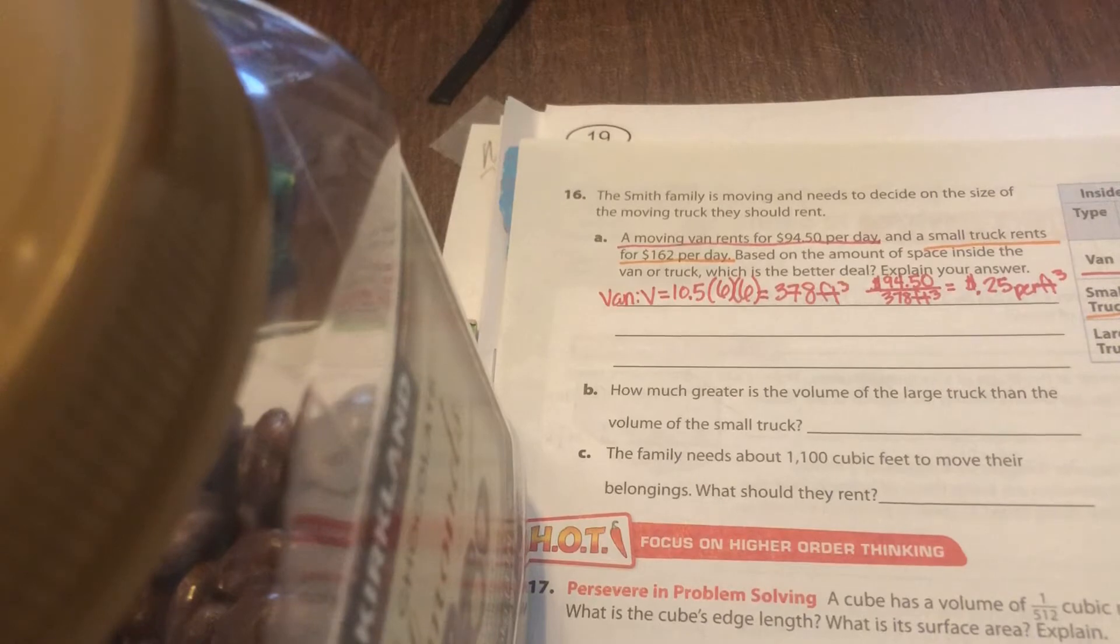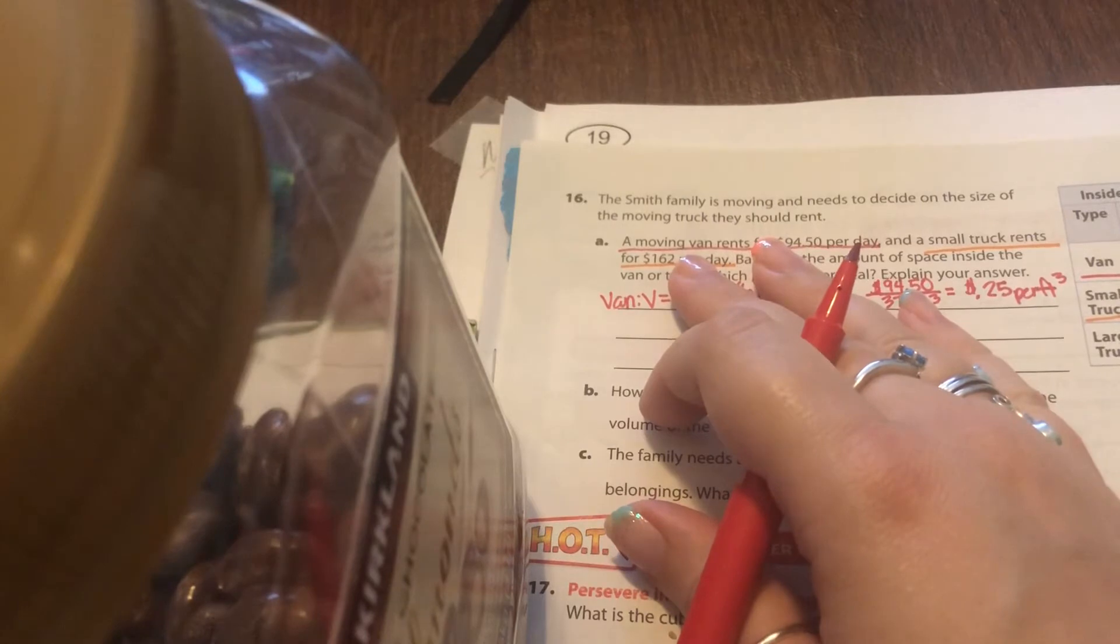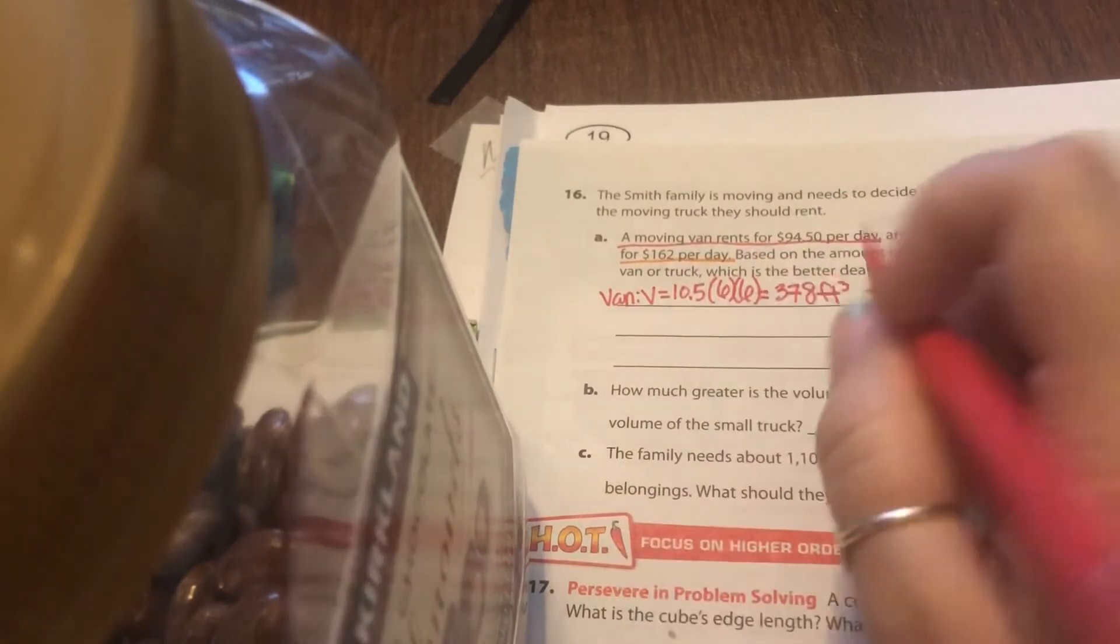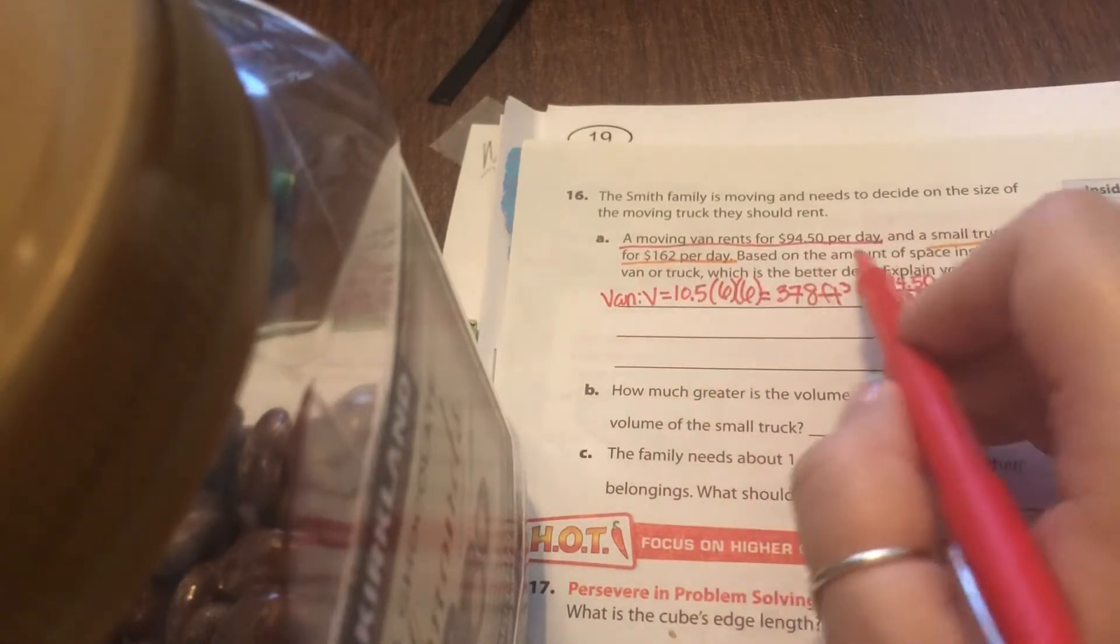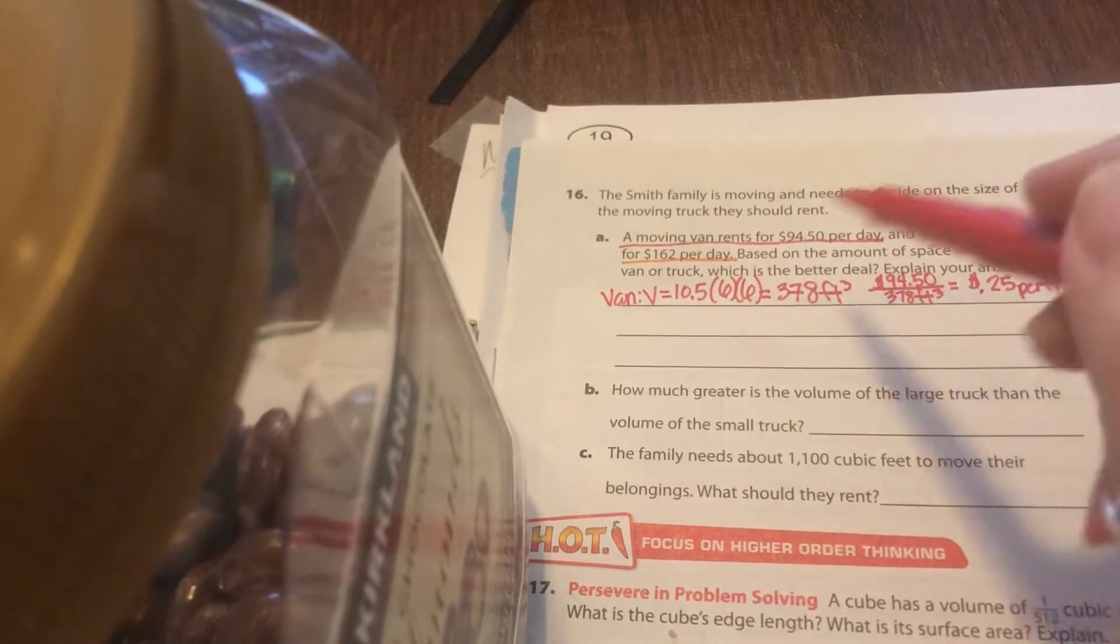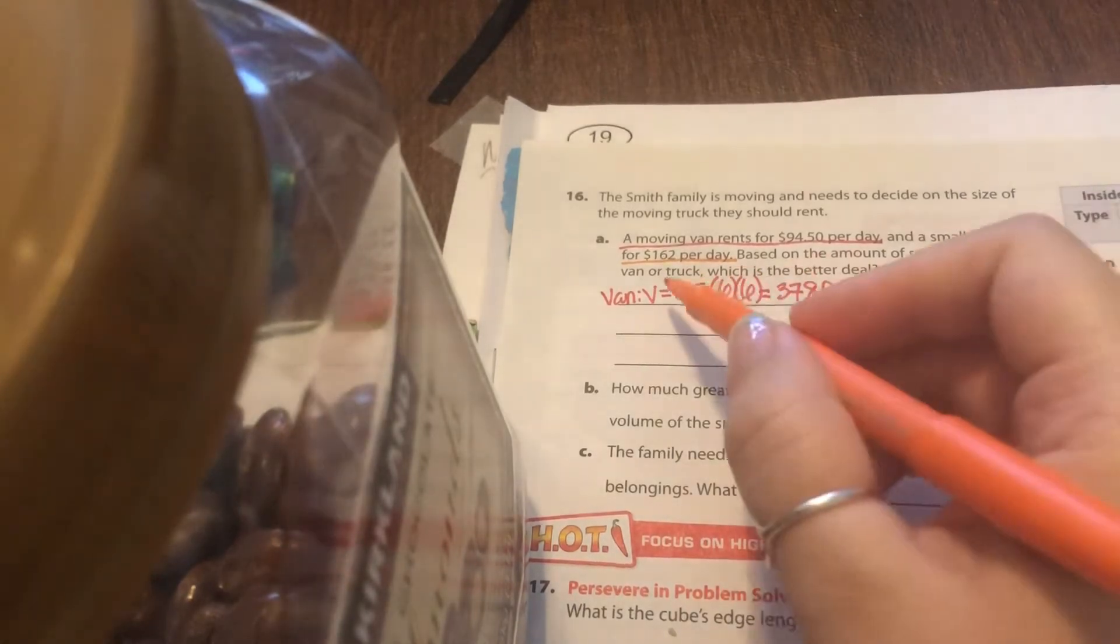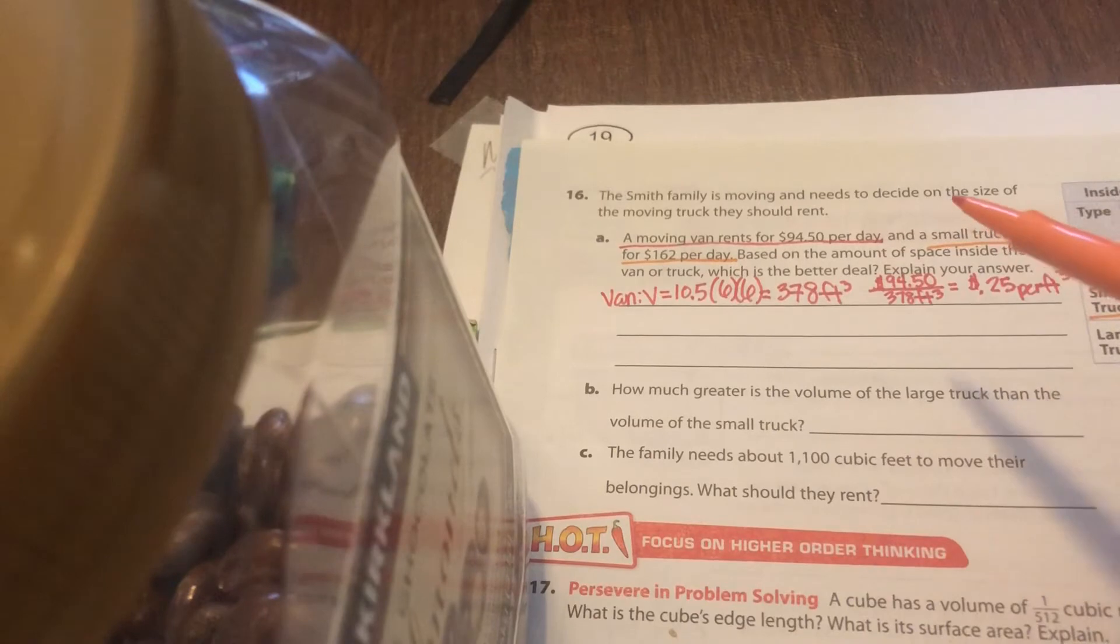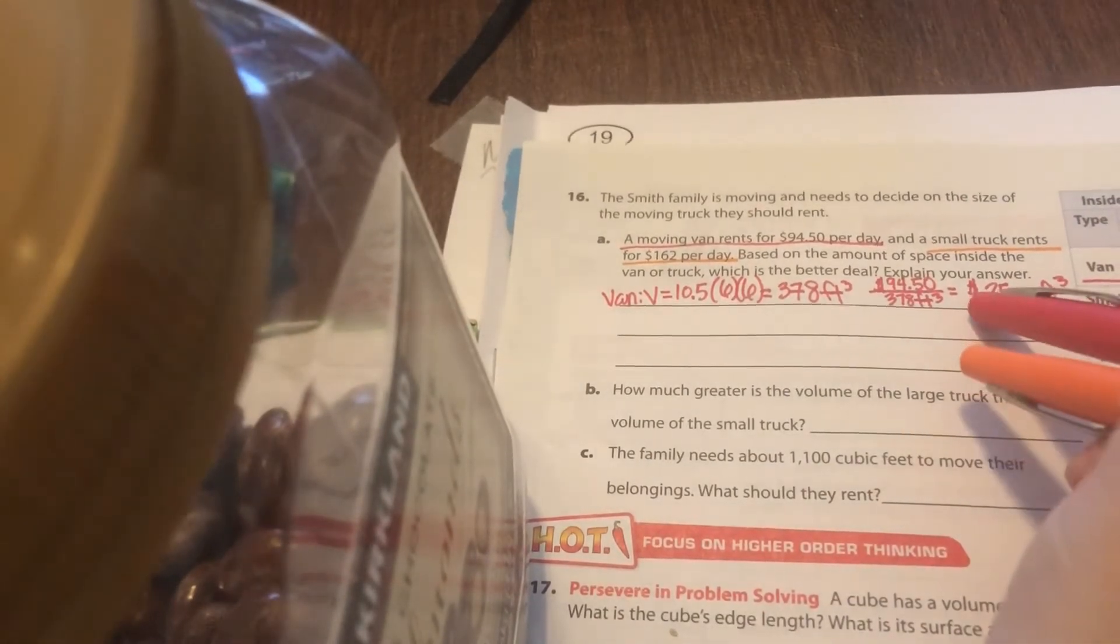So the first part right here on problem 16 says, The Smith family is moving and needs to decide on the size of the moving truck they should rent. A moving van rents for $94 per day. So I'm going to go ahead and highlight the moving van red. And then it says a small truck rents for $162 per day. So I'm going to highlight the stuff that's talking about a small truck and a different color orange. Based on the amount of space inside the van or truck, which is the better deal? Explain your answer.